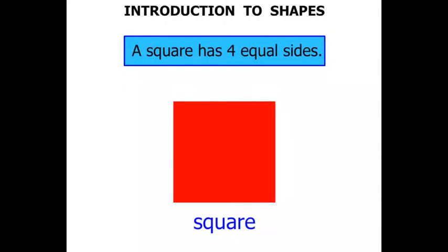And a square has four equal sides. One. Two. Three. Four. So four equal sides and of course those sides are straight.